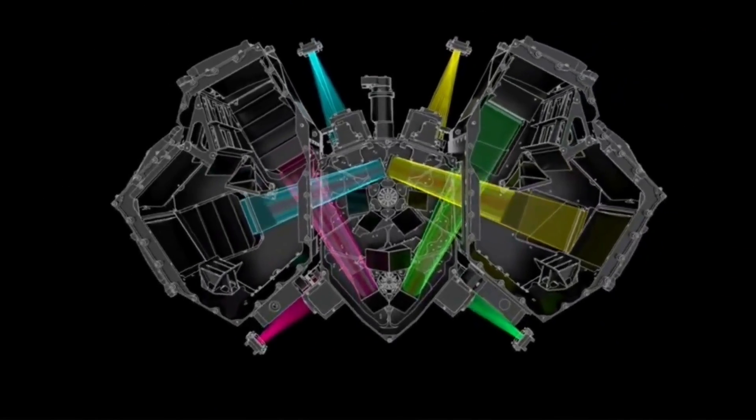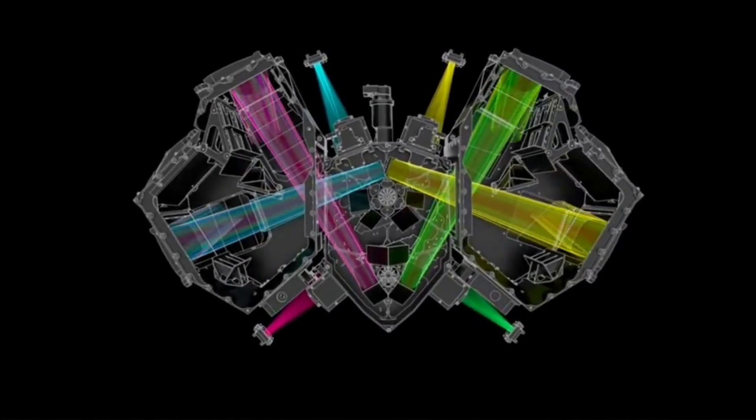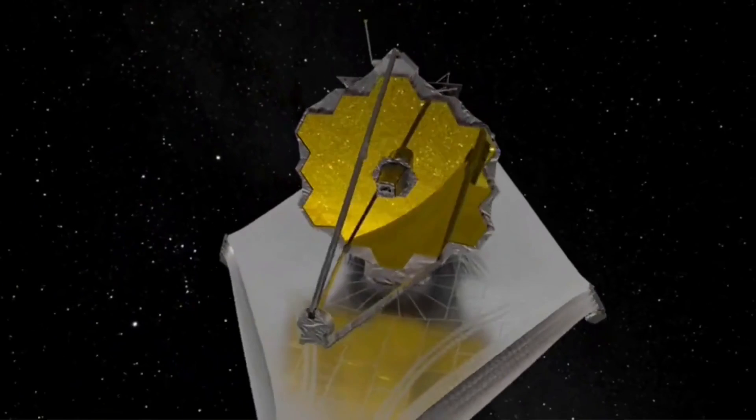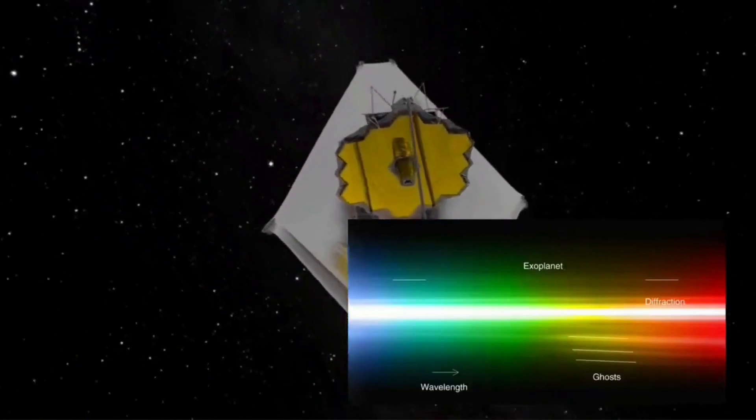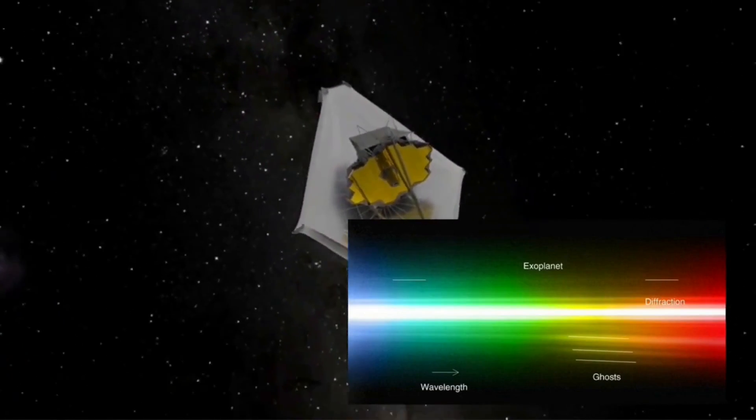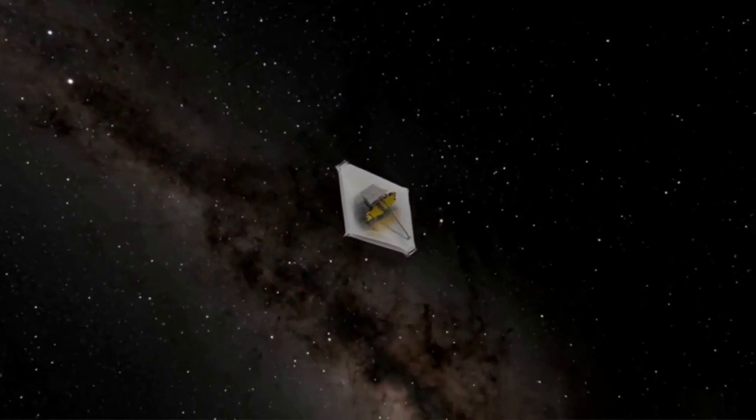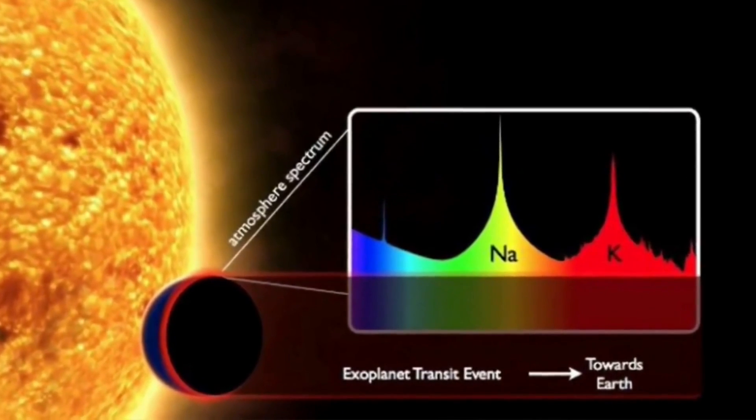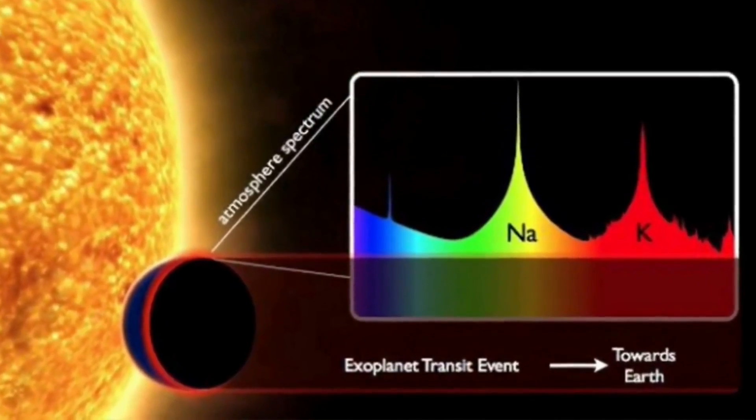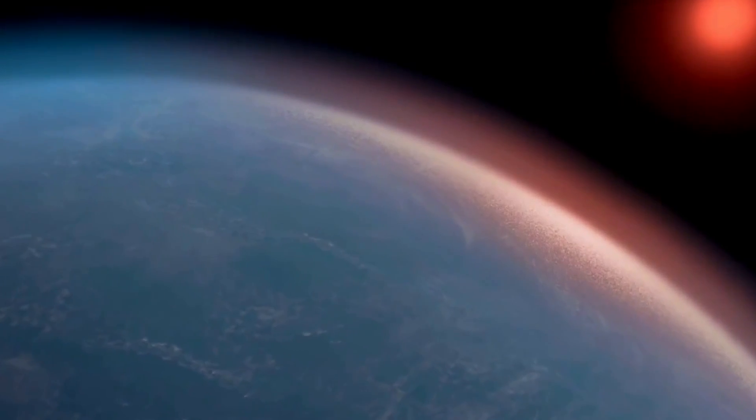And among those exoplanets, WASP-39b was among them, which is in Virgo constellation and is about 700 light-years away from Earth. It was discovered in February 2011 by NASA's WASP project. Under that WASP project, NASA also discovered several other interesting exoplanets.